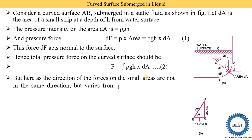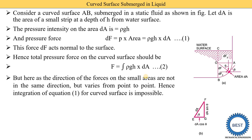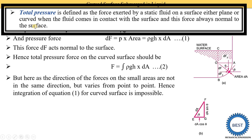However, as the direction of the force on each small area is not the same but varies from point to point, integration of equation number 1 for the curved surface is impossible. For example, from one end of the curved surface the angle θ is 0 degrees, and at the other end θ is 90 degrees — the angle varies. These conditions do not satisfy the normal-to-surface requirement used in the definition of total pressure.